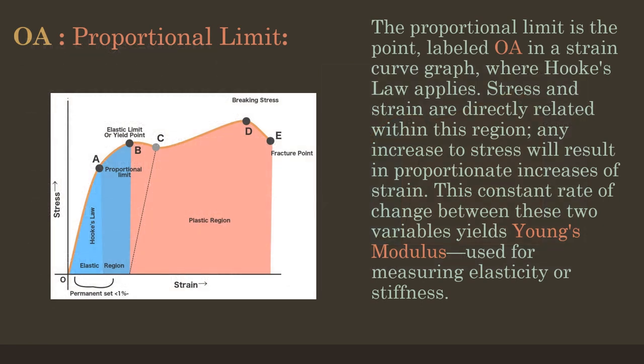Now we're going to look at what each of these plotted points means. The first one is OA, which is the proportional limit. That's the point in a strain curve graph where Hooke's Law applies. Stress and strain are directly related within this region; any increase to stress will result in a proportionate increase of strain. This constant rate of change between the two variables yields the Young's modulus, which is used for measuring elasticity or stiffness.